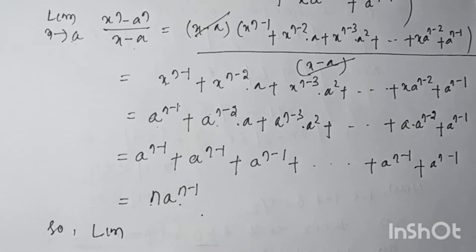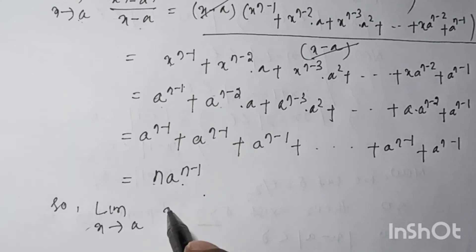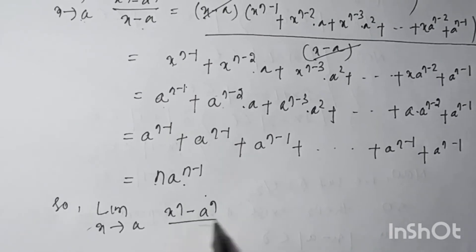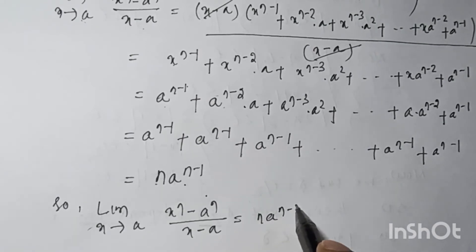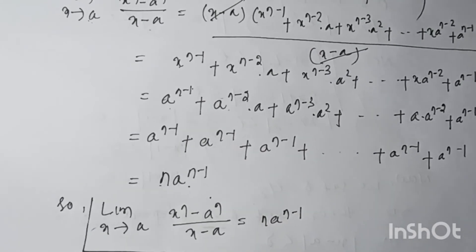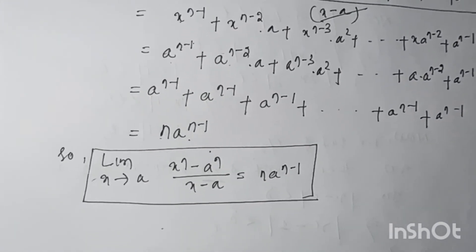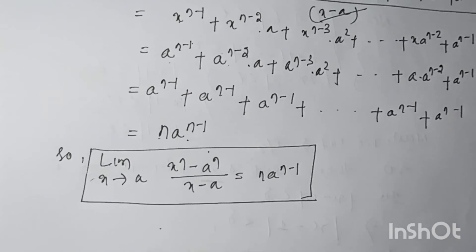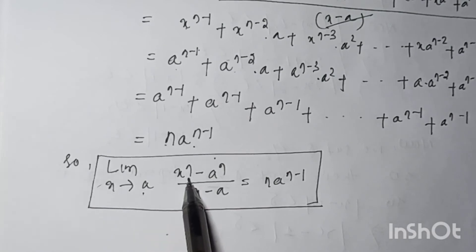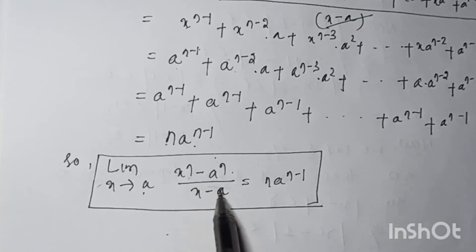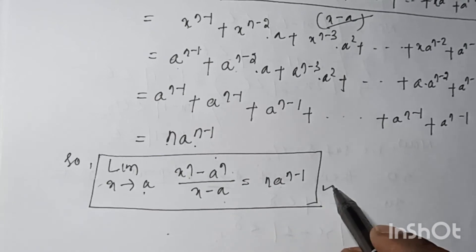Therefore, the limit as x tends to a of (x^n - a^n) / (x - a) is equal to n·a^(n-1). This is the basic concept and proof of the limit formula: limit x tends to a of (x^n - a^n) / (x - a) = n·a^(n-1).